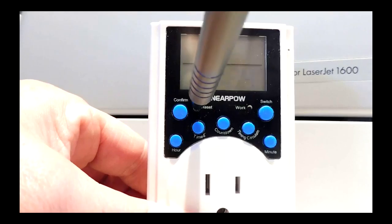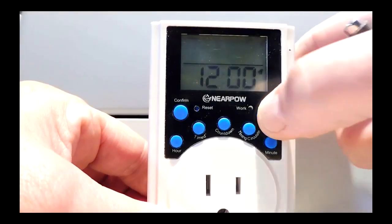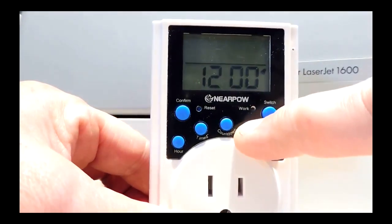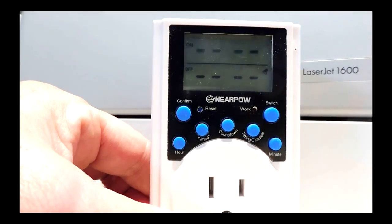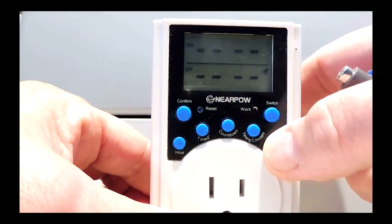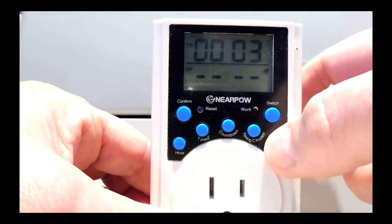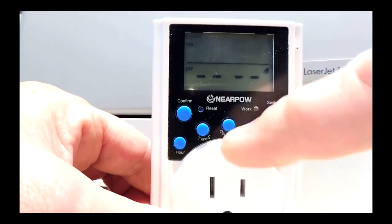First, reset the timer. Then push select. Then hold timing recirculate for 3 seconds. This puts it in seconds mode. Then push the minute button until 4 seconds shows and push timing recirculate again.